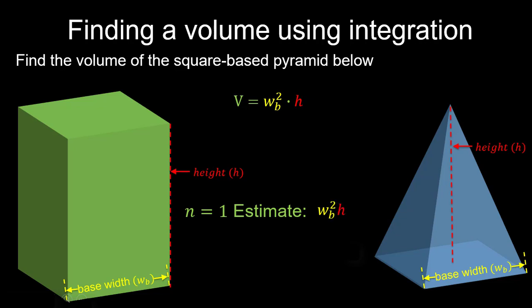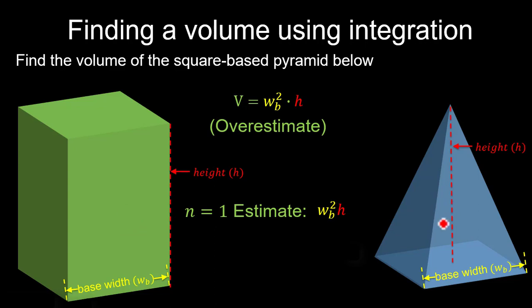It's worth noting that this is going to be an overestimate, because the volume of the shape in green is much bigger than the pyramid in blue — it contains a lot of volume that's not part of the pyramid.